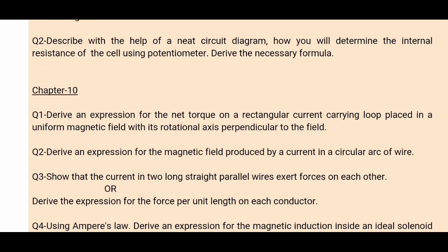Chapter number 10: the first question is derive an expression for the net torque on a rectangular current-carrying loop placed in a uniform magnetic field with its rotational axis perpendicular to the field. This is a lengthy question and will be asked for four marks. You have to show that when a coil placed in a magnetic field rotates, the net torque acting on it is T = NiAb sinθ. The answer is on page 236 to 237.